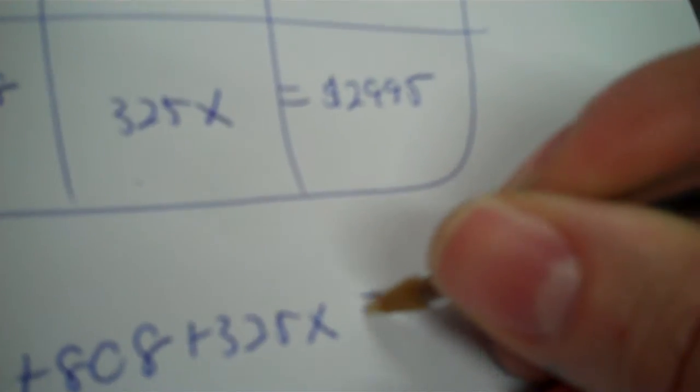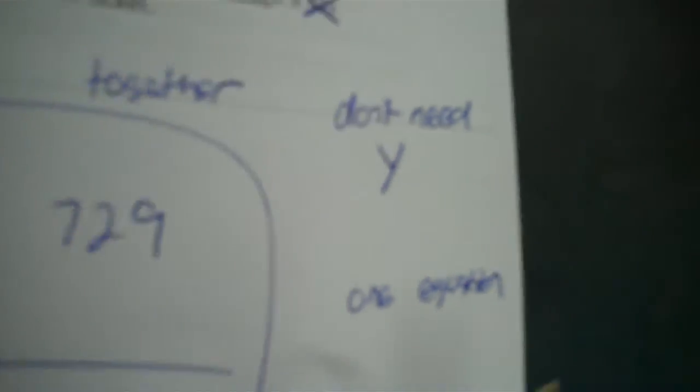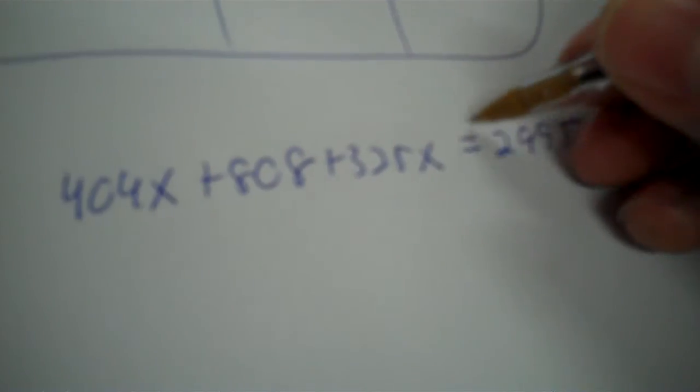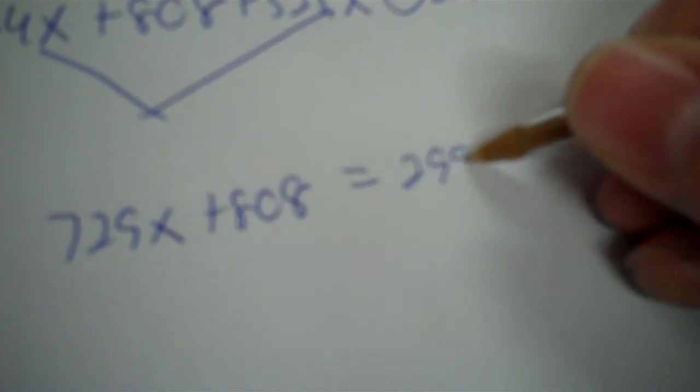And now you have your equation. So 404X plus 808 plus 325X equals 2995. Again, I only need one equation. I knew that when I saw that more than with the unknowns. So V those, and you're going to get 729X plus 808 equals 2995.